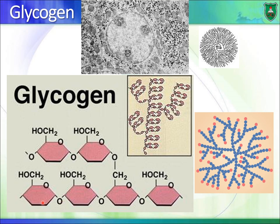Glycogen is mainly composed of glucose residues connected by alpha-1,4 glycosidic bonds. There are also branching points where the bond is between carbon one and carbon six, forming an alpha-1,6 glycosidic bond. It is a highly branched molecule, and following a branch, the chain continues with alpha-1,4 glycosidic bonds.